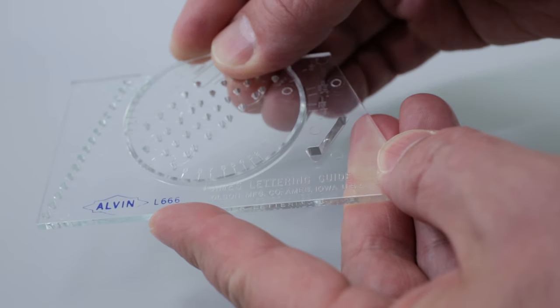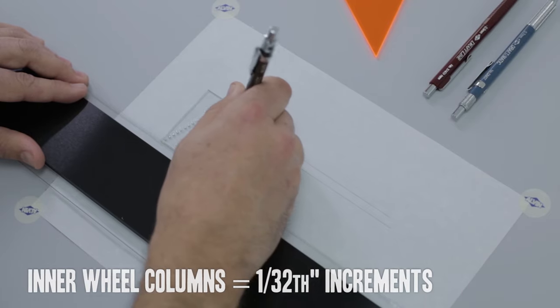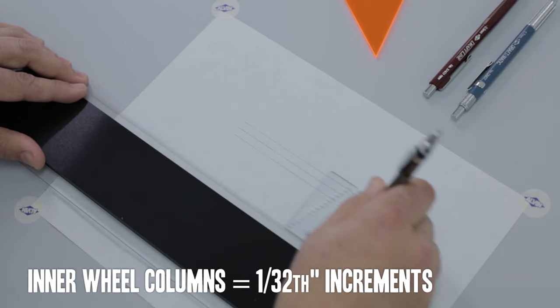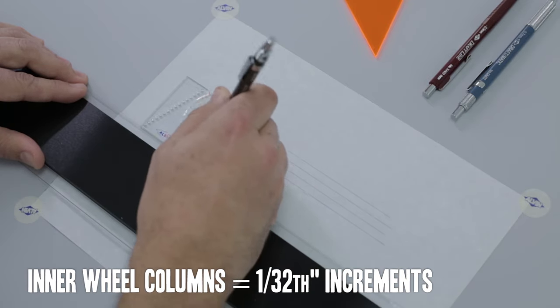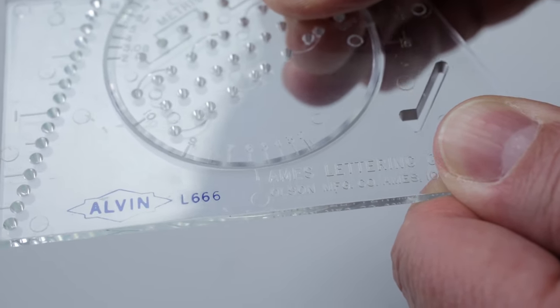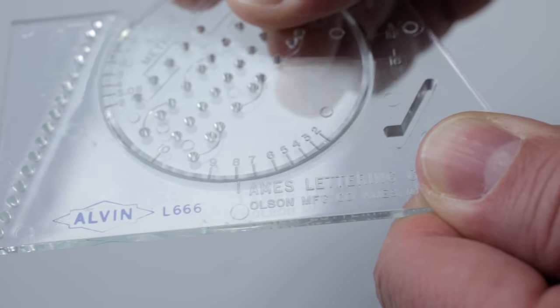The disc on the inside is loaded with holes that will allow you to create guidelines that are smaller and closer than an eighth of an inch. You can rotate the wheel and use the frame index marks to align the holes.